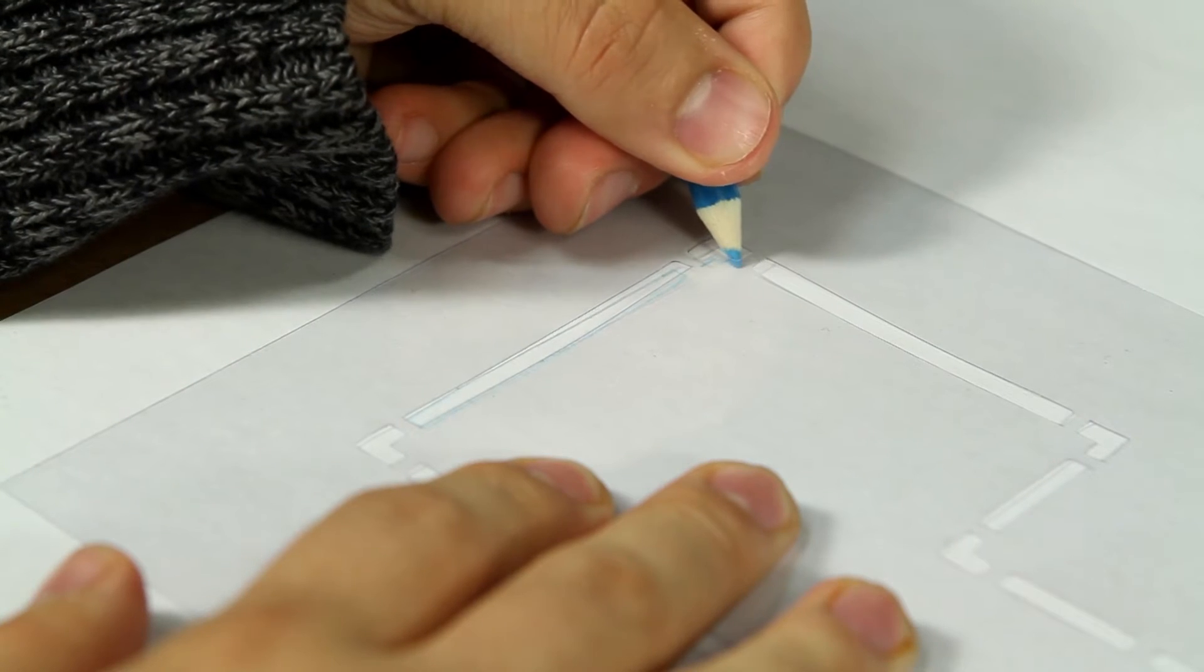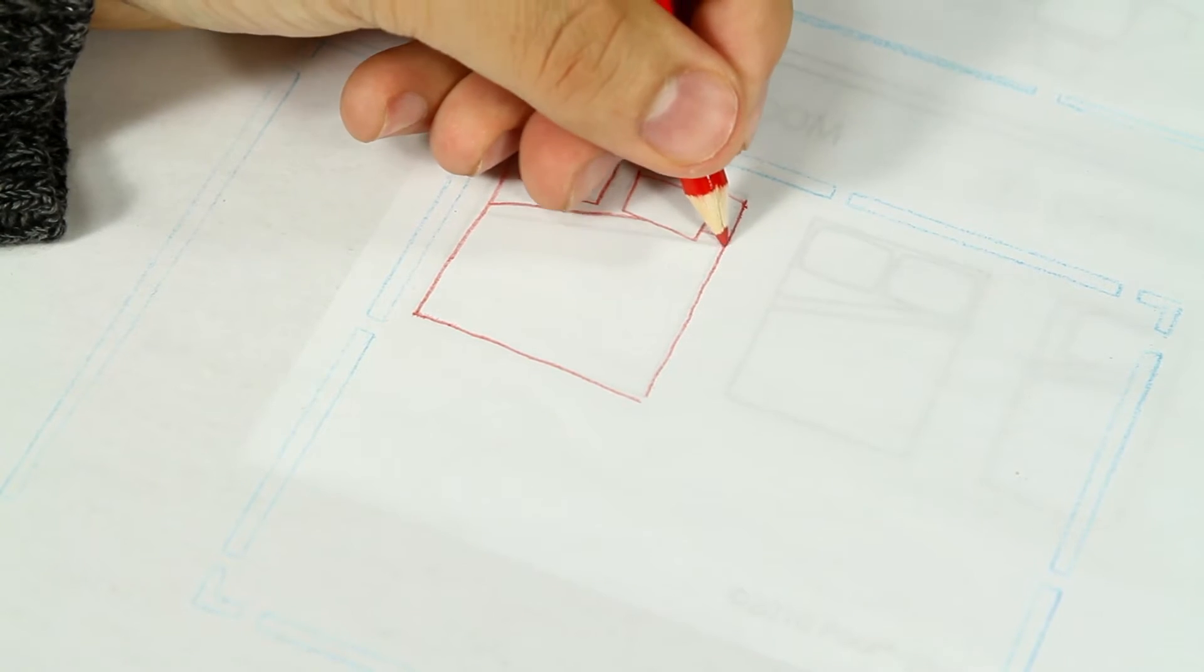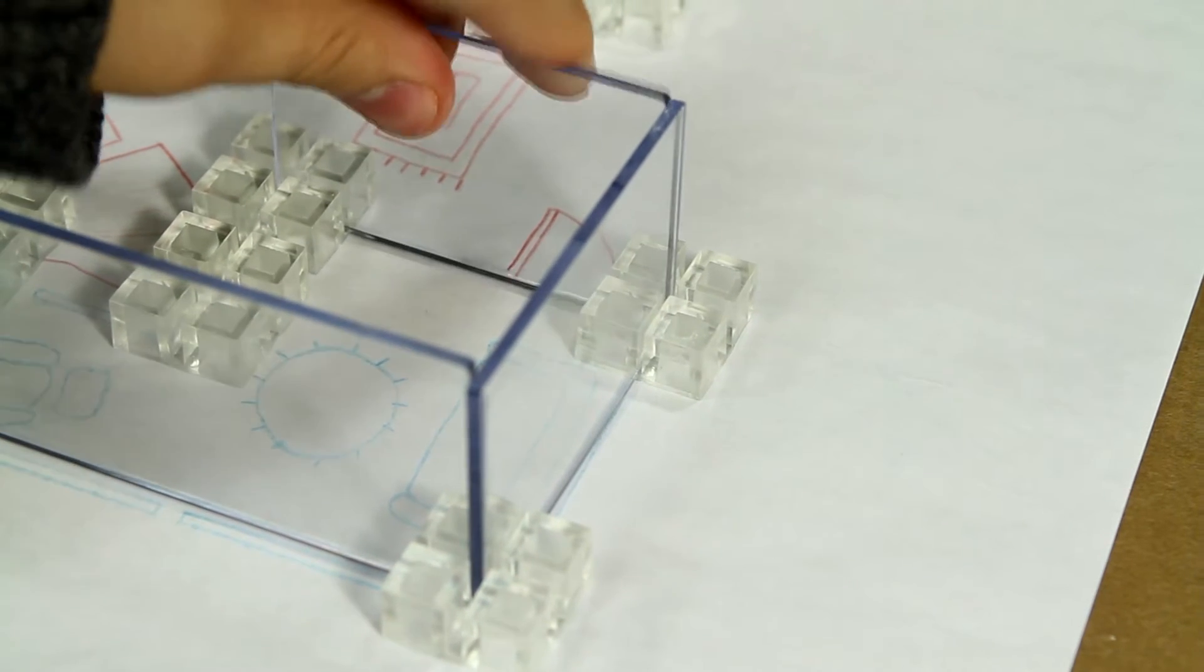Kids will design a floor plan using the room templates, furnish the plan using the furniture guides and colored pencils, and then build a 3-dimensional model on top of the floor plan.